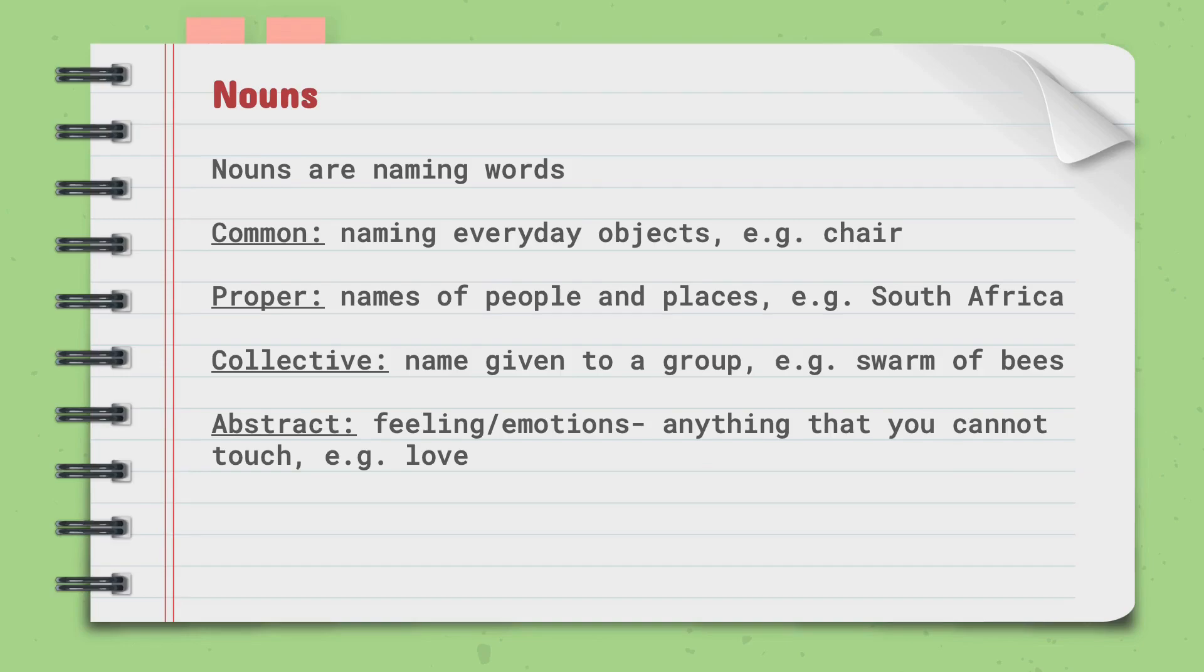Lastly, an abstract noun. An abstract noun is a feeling or emotion. It is anything that you cannot touch. An example of an abstract noun is love.